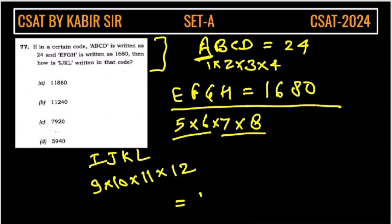So we will multiply, we will get what 11880. So you can multiply this. So the answer will be option A.